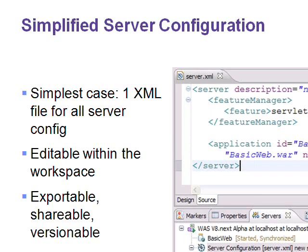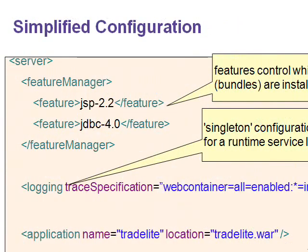In addition, all the goods of Liberty Profile: very small footprint, simplified configuration, fastest startup, fidelity with full profile WAS. This is free, there is no expiration, and the first version will be focused more on the web — web application development, focusing on JPA, transaction security, OSGi mobile apps, and so on.